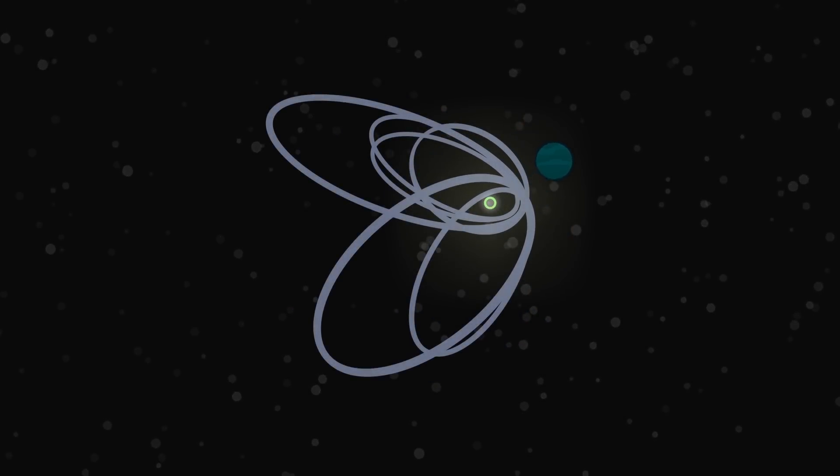13 of the most distant known Kuiper Belt objects, for example, all have orbits that line up in a very peculiar way. The clustering of orbits like this is extremely unlikely to have happened just by chance, but the existence of planet 9 could easily explain it.